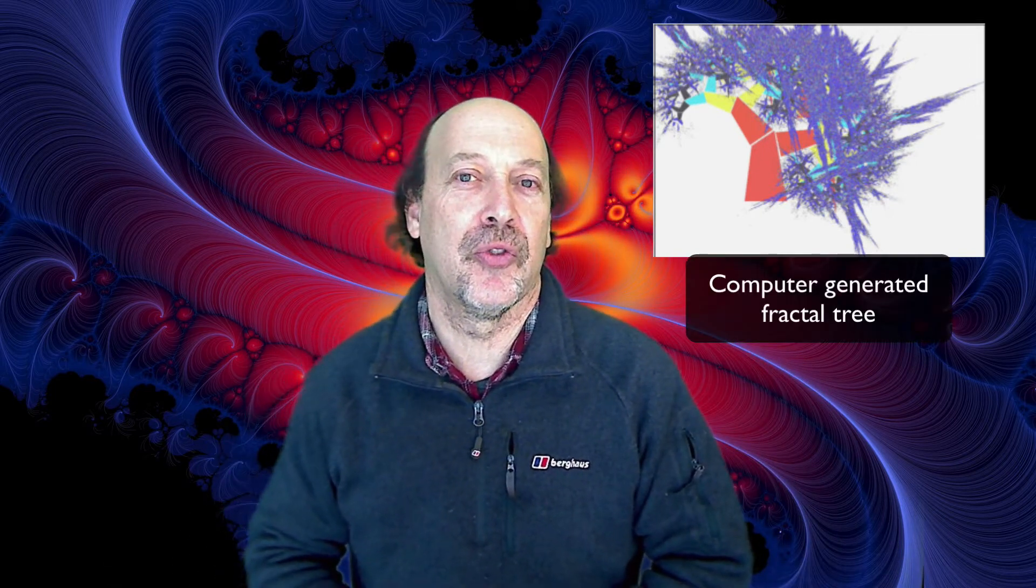Today, I want to show you why there's a difference between mathematically fractal objects and objects that are actually found in nature. Because the objects that I showed you in the previous video are actually computer drawn images. And as you can see, this fractal background behind me is a computer drawn fractal image. But in reality, the fractals that we find in nature don't continue on and on forever at a smaller and smaller scale.